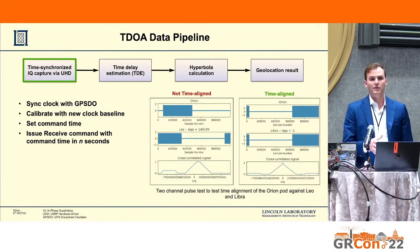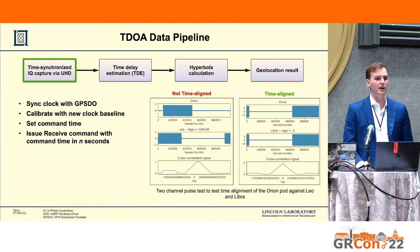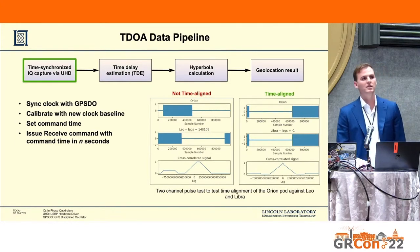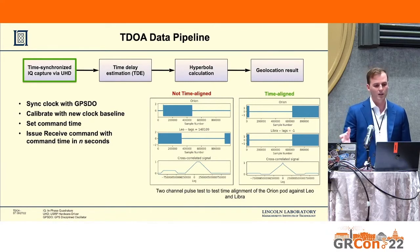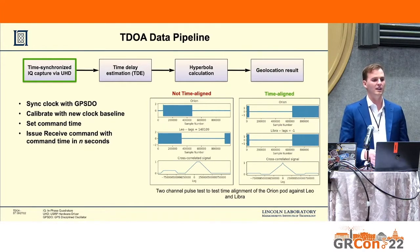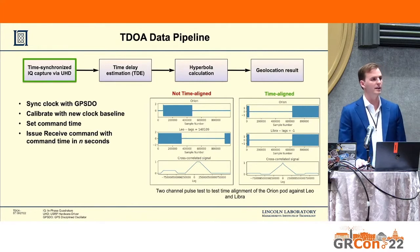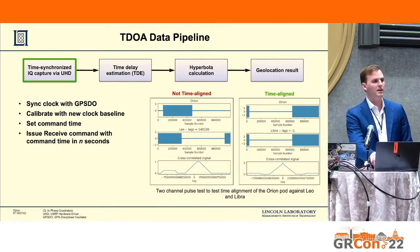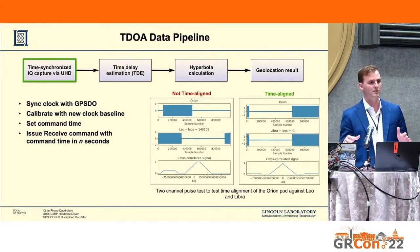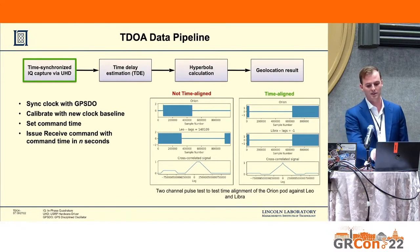For the first step, we wanted to use the USRP X310s that we already had available. Through UHD we're able to utilize timed commands along with the GPSDO to make this happen — they have great documentation on this. You essentially calculate a new clock baseline, set a command time, and then set that receive command to happen in N seconds. You end up being accurate to about plus or minus 50 nanoseconds. You can utilize that to have non-co-located receivers all capture essentially the same instantaneous moment in time.